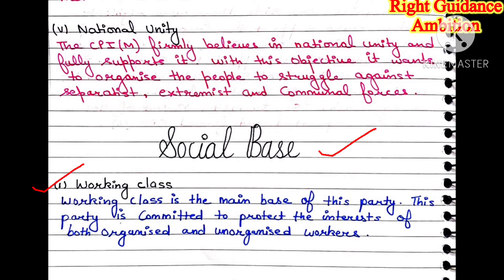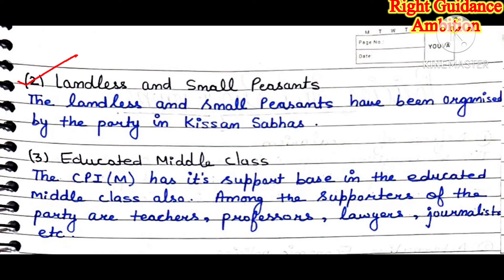The next heading is social base — which groups support CPIM. First, the working class. The main support of CPIM is the working class, and the party is committed to always protecting the interests of labor and working class, whether they work in the organized sector (public sector) or unorganized sector (private sector). Second, landless and small peasants. They also support this party because CPIM has formed farmer fronts all over India, listens to their problems, and makes the government aware of their issues. Third, the educated middle class — teachers, professors, lawyers, journalists — these people vote for CPIM.